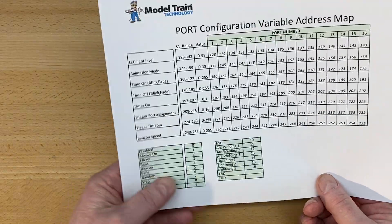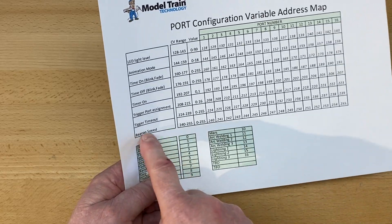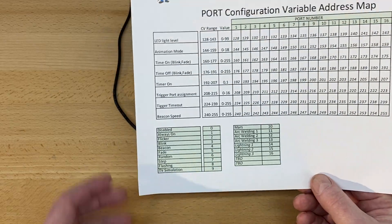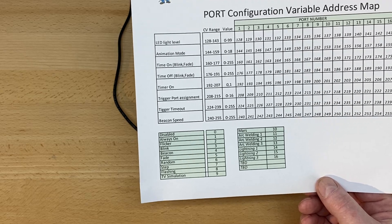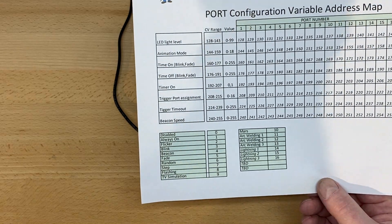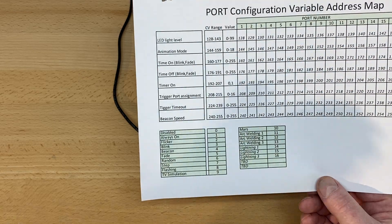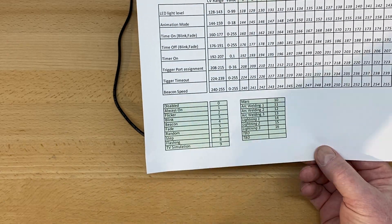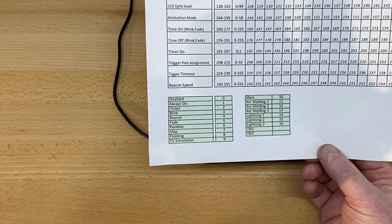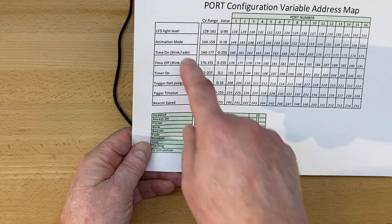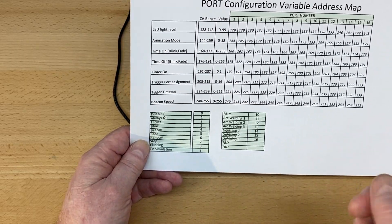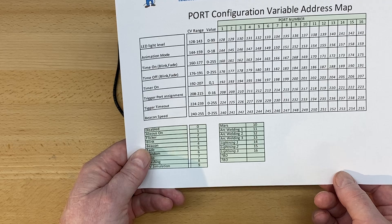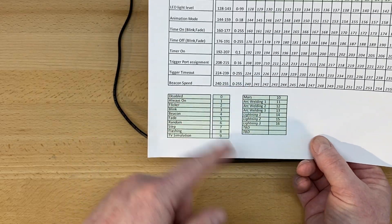We have a rotating beacon simulation, and if you want the beacon to go faster or slower you change it at the assigned port. In an earlier version, a customer set his rotating beacon on top of radio towers and they were all rotating at the same time. He said that's not realistic — in real life, multiple radio tower beacons are slightly offset from each other. You can fix that by making beacon speeds one number different so the blinking sequences are slightly off.